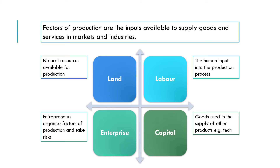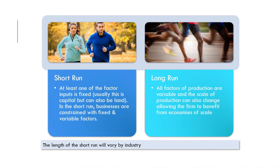In economics we have the factors of production — these are the inputs available to firms to combine to generate goods and services. Thinking about the short run and the long run: in the short run, at least one of the factors is fixed. Normally that's going to be capital — a factory or machines. We can add raw materials and workers, but the amount of capital is fixed. It could also be land.